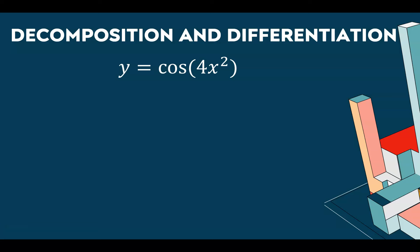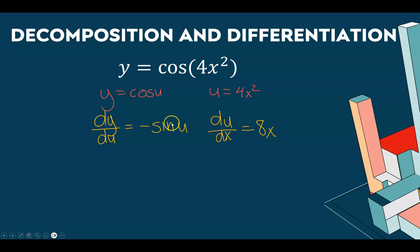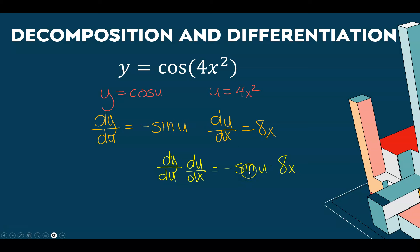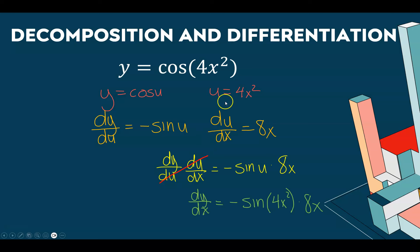For y = cos(4x²), the outer function is cosine, so dy/du = −sin(u), and du/dx = 8x. Multiplying these together, the du's cancel, giving dy/dx = −sin(u) · 8x. Replacing u with 4x², we get dy/dx = −sin(4x²) · 8x.